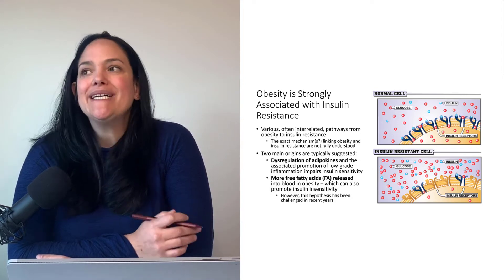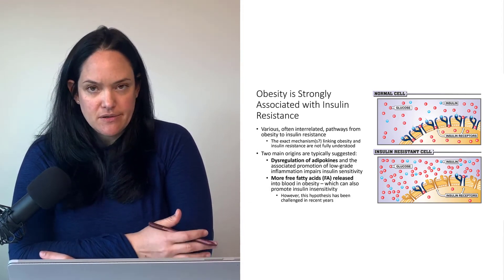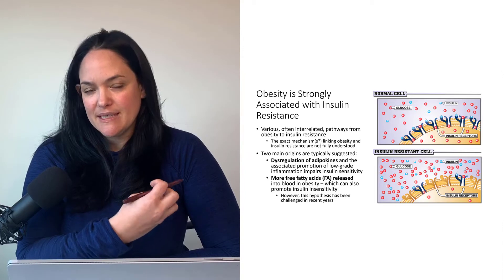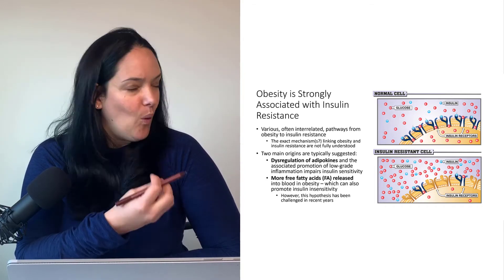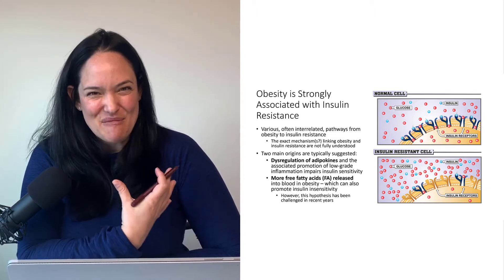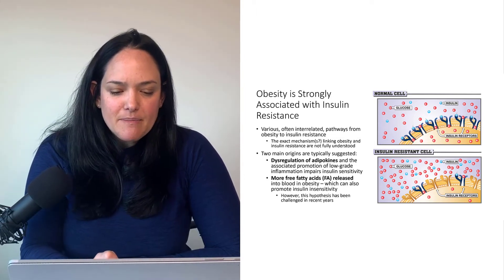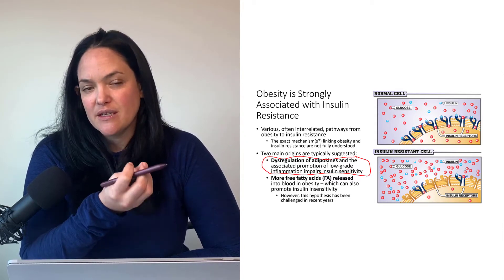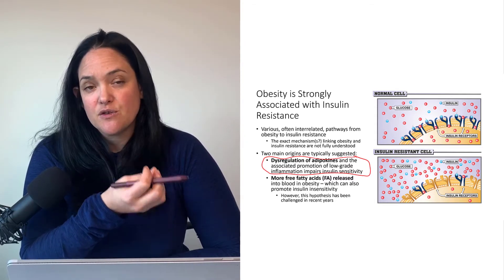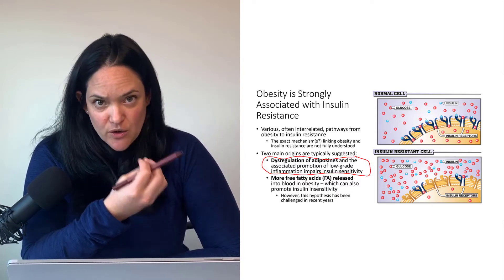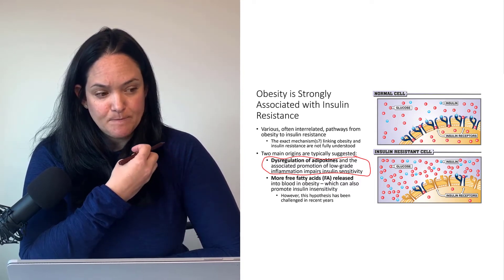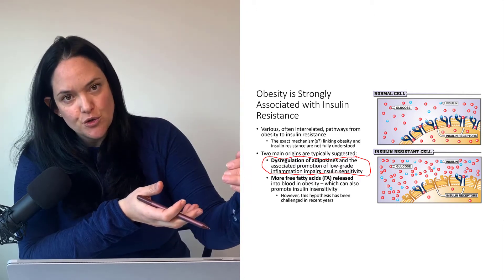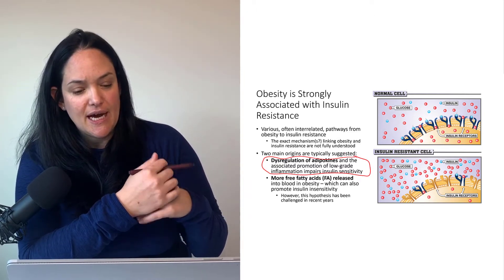So what is it about obesity that promotes insulin resistance? We don't totally know, and probably it's a number of related mechanisms — because our bodies are complex systems. The main current belief, gaining in popularity, is that it is the dysregulation of adipokines — that dysregulated secretion from the larger white adipose tissue mass — that promotes a pro-inflammatory condition contributing to impairment of the insulin receptor and its functions.